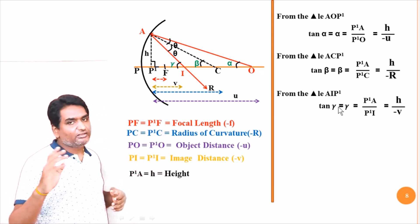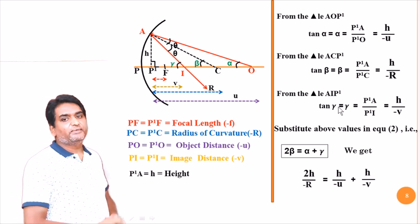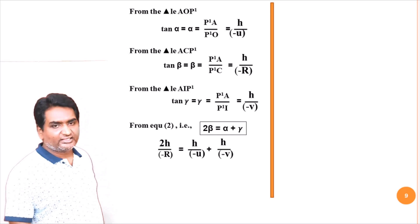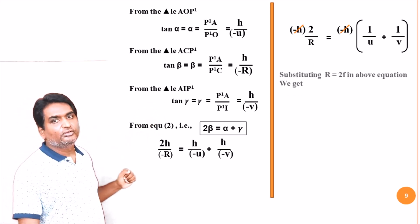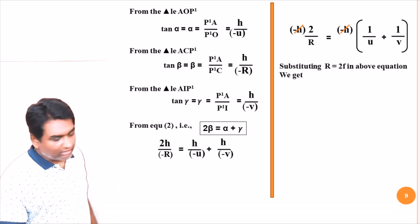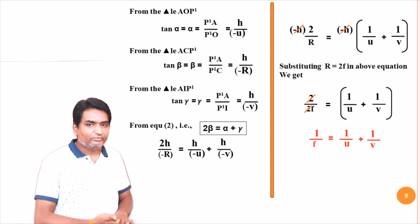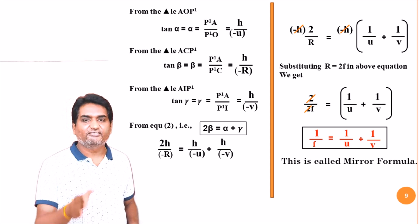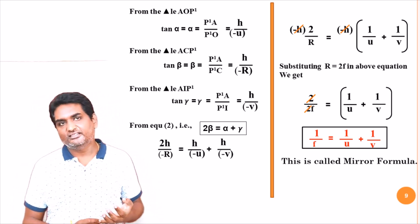Let us substitute the values of alpha, beta, and gamma into equation 2. Equation 2 becomes: 2h divided by minus r equals h divided by minus u plus h divided by minus v. Taking minus h common and cancelling, we get 2 divided by r equals 1 divided by u plus 1 divided by v. Substituting r equals 2f, we get 2 divided by 2f equals 1 divided by u plus 1 divided by v, and the 2 cancels, giving us 1/f equals 1/u plus 1/v. This is the mirror equation, applicable to both concave and convex mirrors, giving the relation between focal length, object distance, and image distance. While using this equation, apply appropriate sign conventions depending upon the situation.